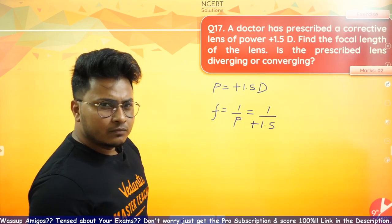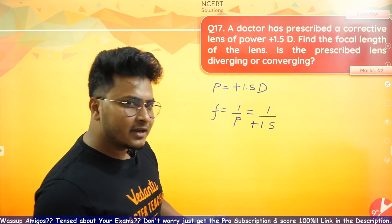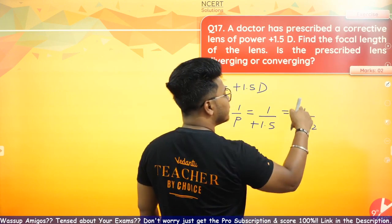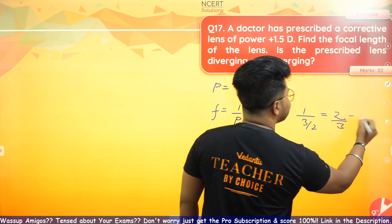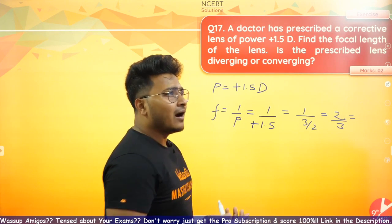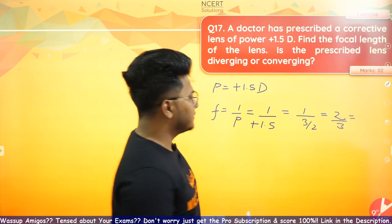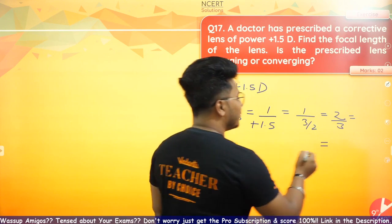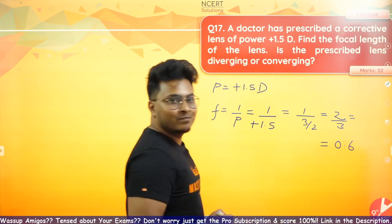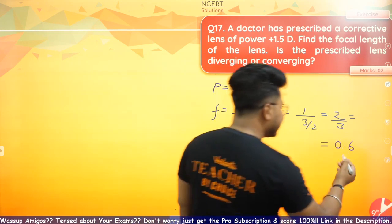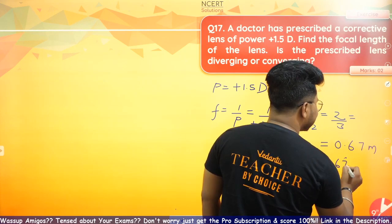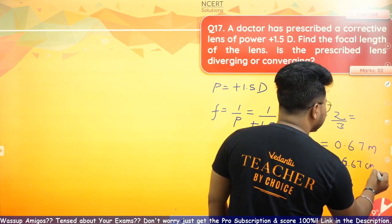Now, 1.5 is equal to 3 by 2, so 1 upon 1.5 becomes 2 by 3. This is easier to calculate: 2 divided by 3 gives 0.67. So the focal length is 0.67 meters, which in centimeters is 66.67 centimeters.